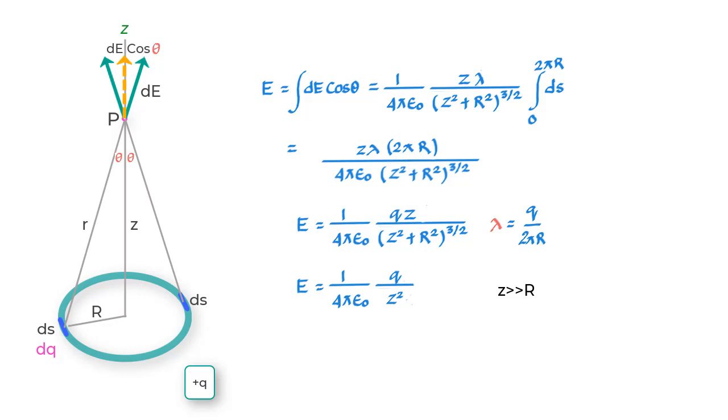You see that this expression corresponds to what would be the E value due to a point charge. This makes sense since at a very large distance the ring would actually look like a point object and therefore the E value would be the same as what you would get from a point charge.